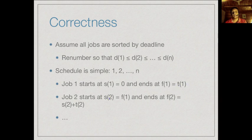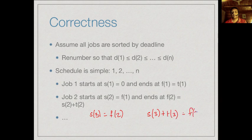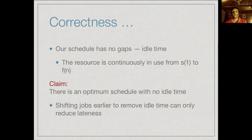The starting time s(2) for job 2 is as soon as job 1 ends, at f(1), and it ends at s(2)+t(2). Similarly s(3)=f(2), and so on. We schedule each job as soon as the previous one ends in this deadline order. Since we are scheduling jobs one after the other without waiting, the schedule has no gaps — no idle time — and the resource is continuously in use until all requests are finished.